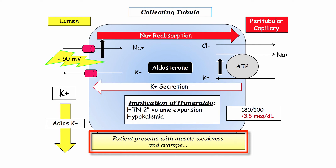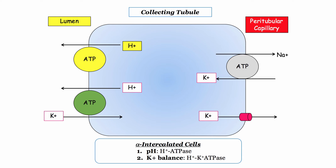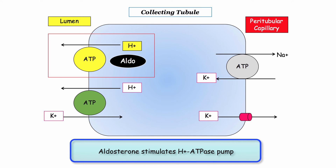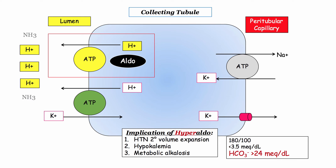Aldosterone impacts the activity of two cell types. Moving downstream to the intercalated cells, these cells are involved in the regulation of pH and potassium balance. The most important take-home here is that aldosterone stimulates the hydrogen ATPase pump, leading to our third key manifestation. Hyperaldosteronism is associated with a metabolic alkalosis that will be expressed by elevation of the bicarb level. On the boards, you will be looking for values higher than the normal value of 24 milliequivalents.